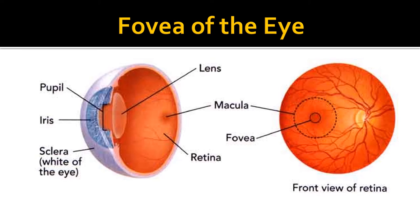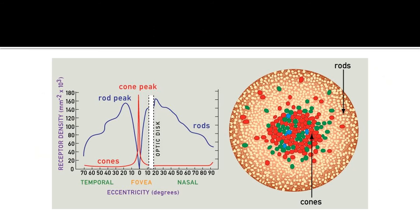This picture shows the location of the fovea in the center of the macula. The figure on the right shows that overall there are more rods than cones, but in the central part — the fovea — it is dominated by cones. There are three types of cones for the three primary colors: red, blue, and green.